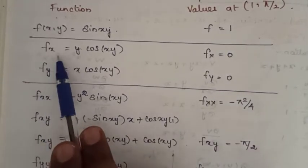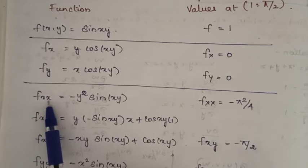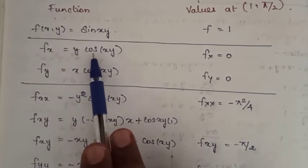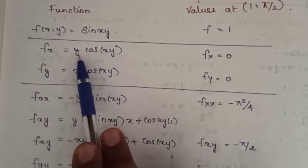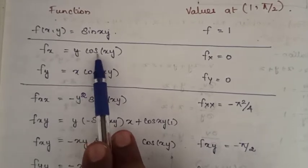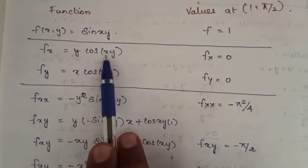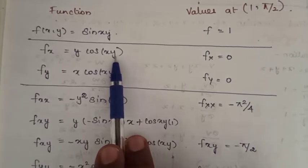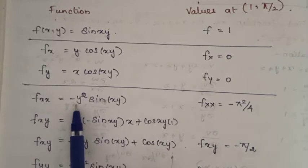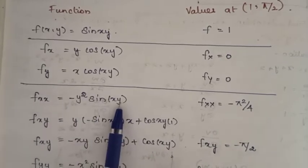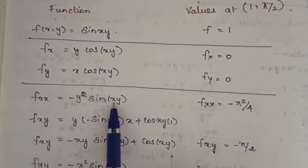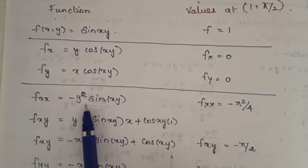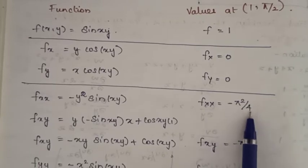Next, differentiate fx = y·cos(xy) with respect to x again to get fxx. Differentiating cos(xy) with respect to x gives minus sin(xy), and differentiating xy with respect to x gives y. So fxx = minus y²·sin(xy). Substituting x = 1 and y = π/2, sin(π/2) = 1 and y² = π²/4, so fxx(a, b) = minus π²/4.